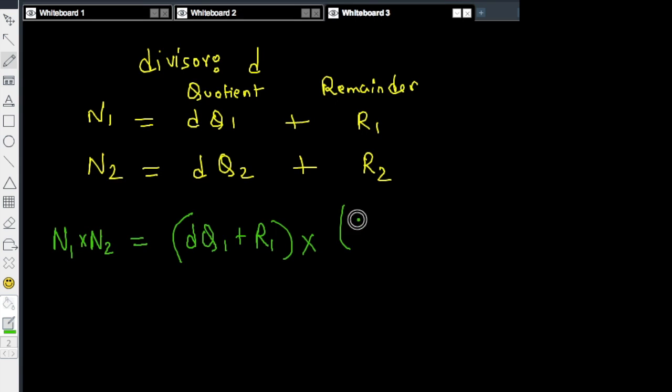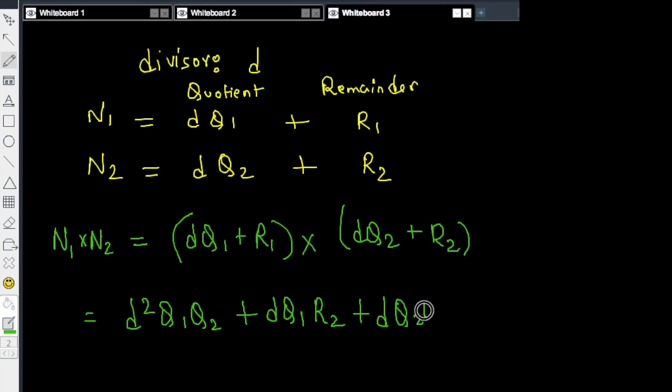Let's expand this. We get D square q1 q2 plus D times q1 r2 plus D times q2 r1 plus r1 r2.